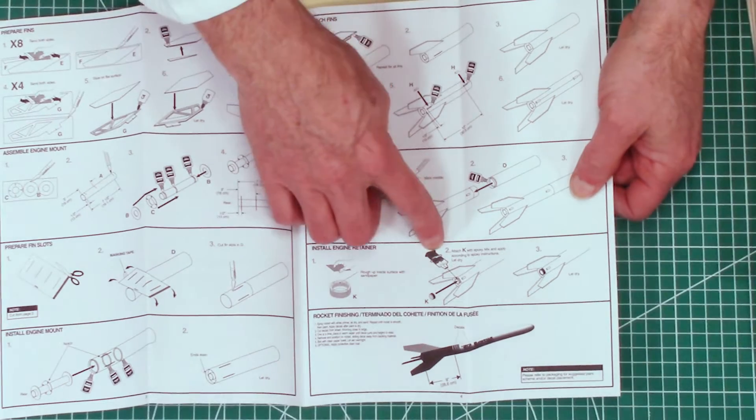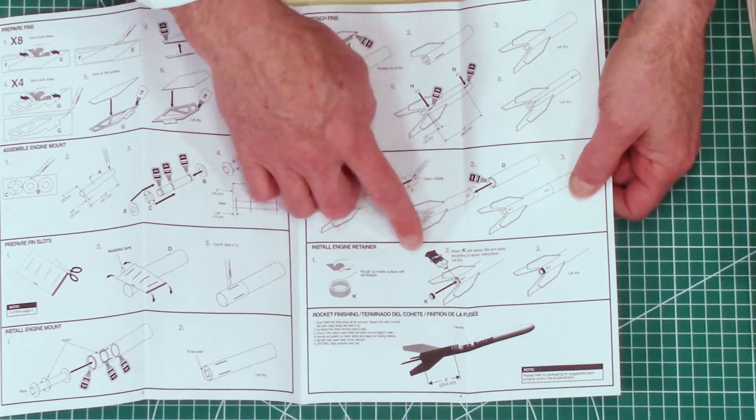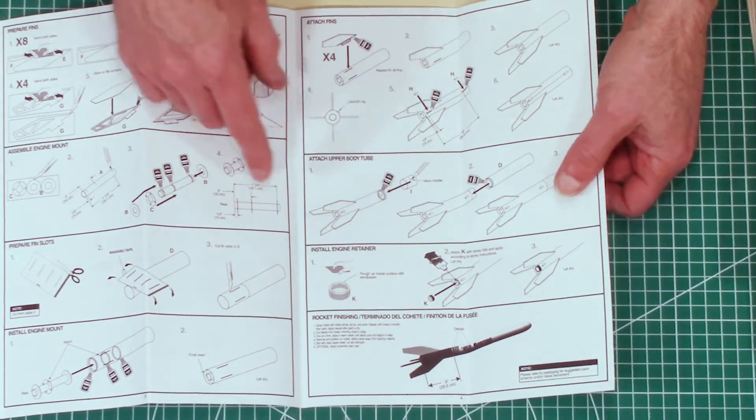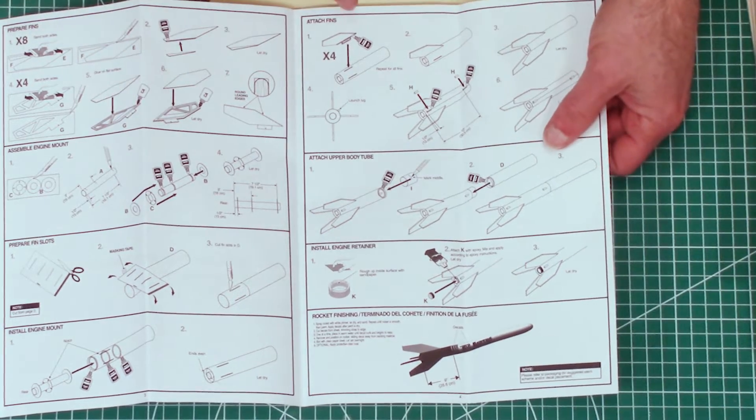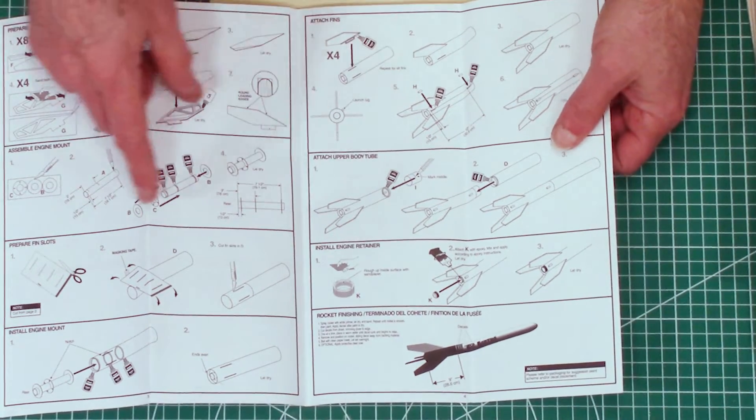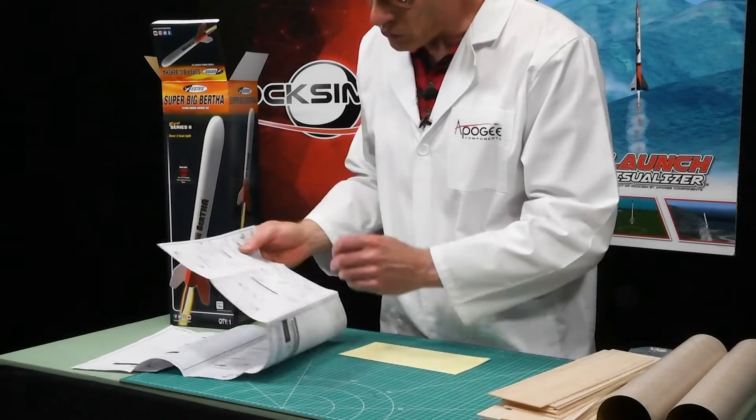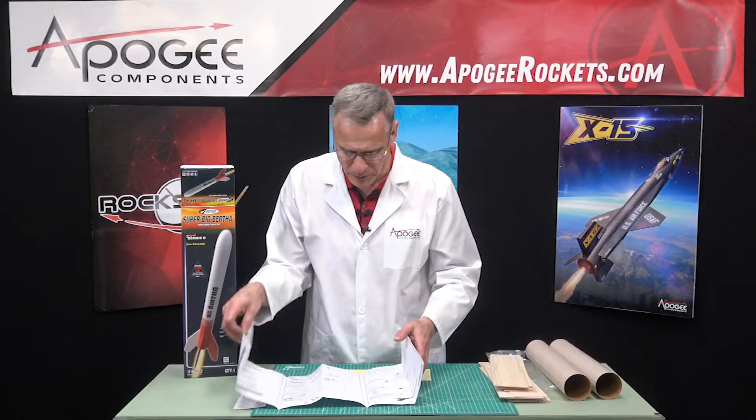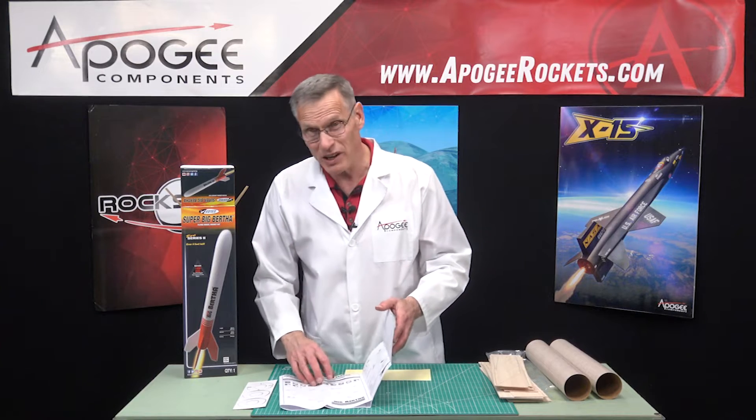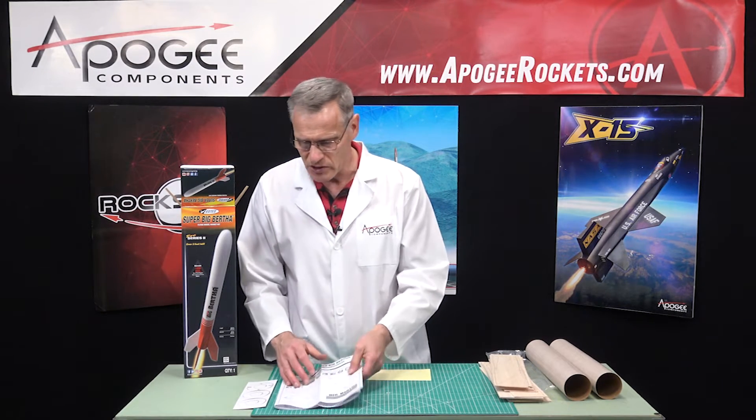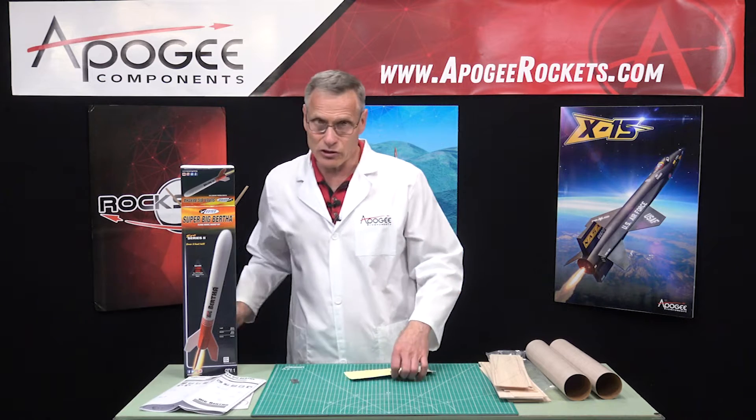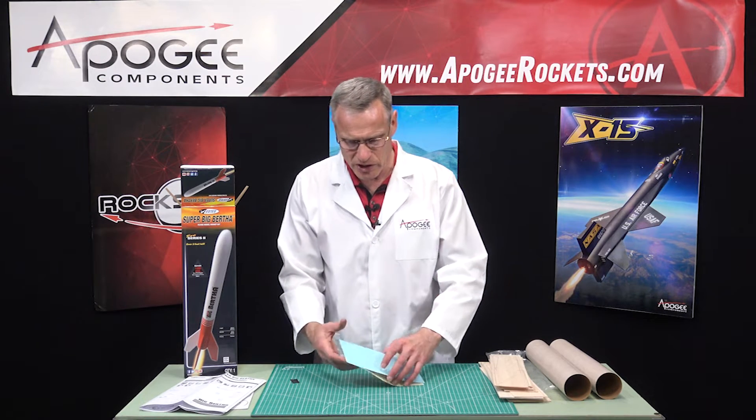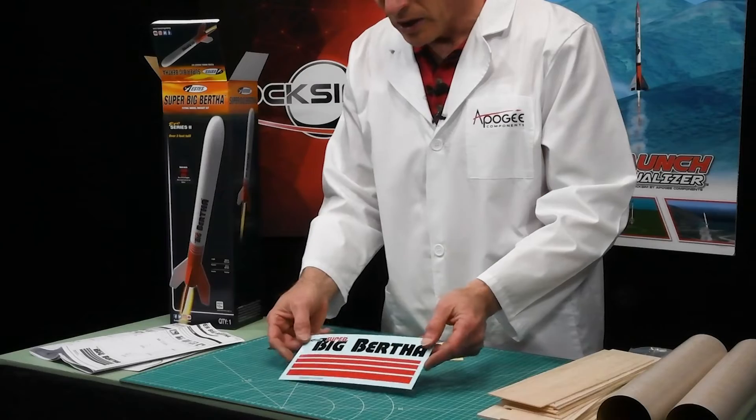I can see here that they are calling for the use of epoxy, and that's for the engine retainer because that's plastic. But everywhere else, it looks like they're just using regular wood glue for everything. And instead of epoxy, you might get away with super glue. I've glued those retainers on, and they usually glue just fine.